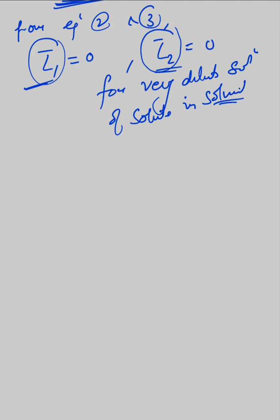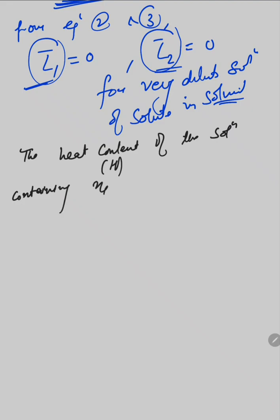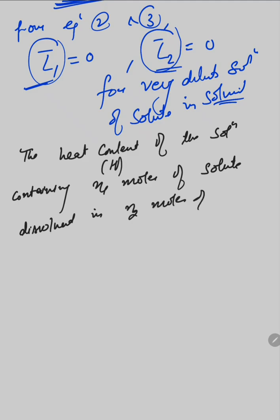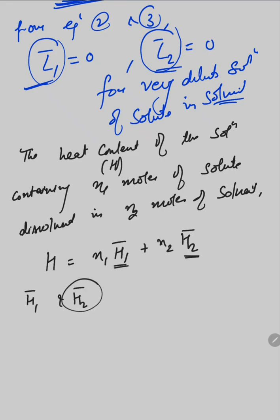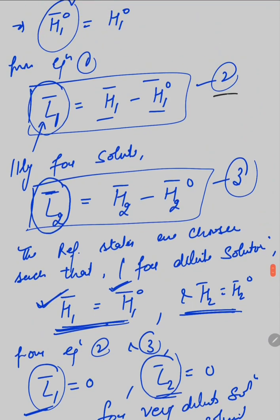Now, the total value of the heat content — that is the heat content of the solution — contains n1 moles of solute dissolved in n2 moles of solvent. Here, h1 bar and h2 bar are the partial molar heat content for the solute and for the solvent respectively. So h1 bar and h2 bar values can be easily calculated from equation number second and equation number third.